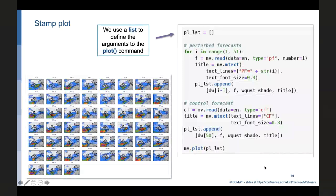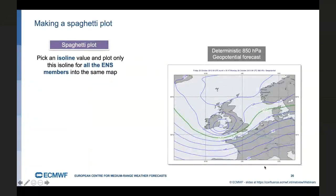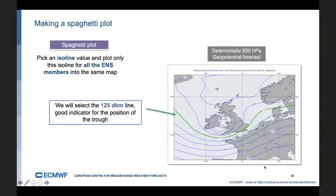Another way of looking at the individual members is a spaghetti plot. In a spaghetti plot, we are interested in a certain feature. And typically, we pick an isoline value that identifies the feature and plot only that isoline for all the ensemble members into the same map. So in this case, we selected the geopotential on 850 hectopascals. This is the deterministic forecast and the isoline highlighted in green. This is the 125 decameter line. It gives us an indication of the location of the trough associated with this storm. So we will create a spaghetti plot for this isoline value.